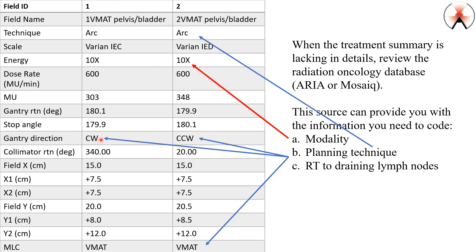CW — the gantry is rotating in a clockwise direction. This other one is counter-clockwise rotation. Both of them are indicative of arc therapy, equivalent to IMRT. And finally, here we also see VMAT. VMAT stands for volumetric modulated arc therapy — and I repeat, arc therapy.